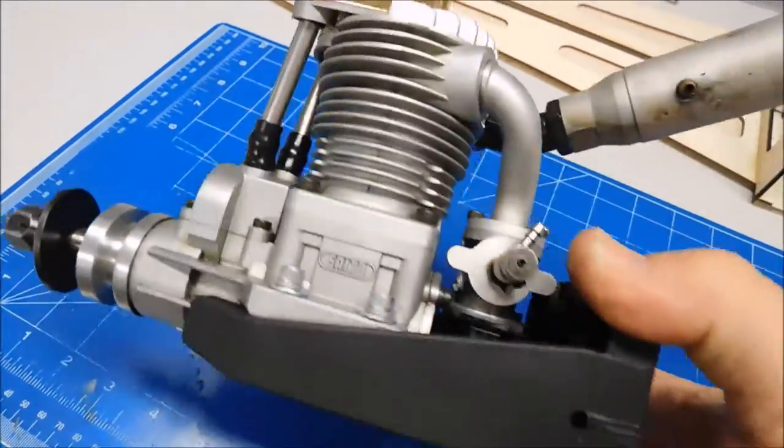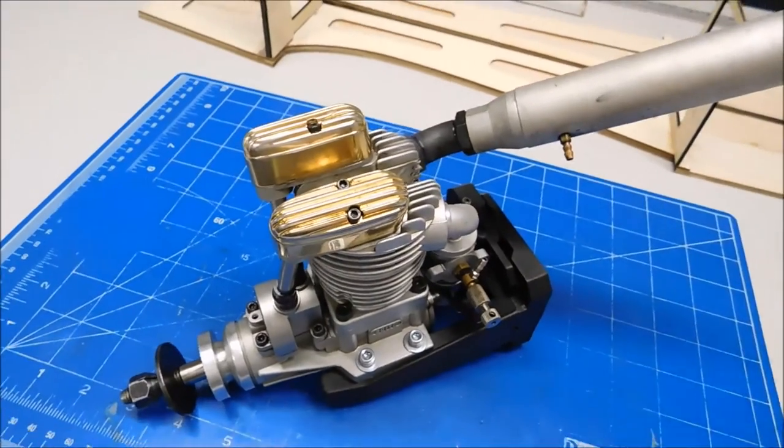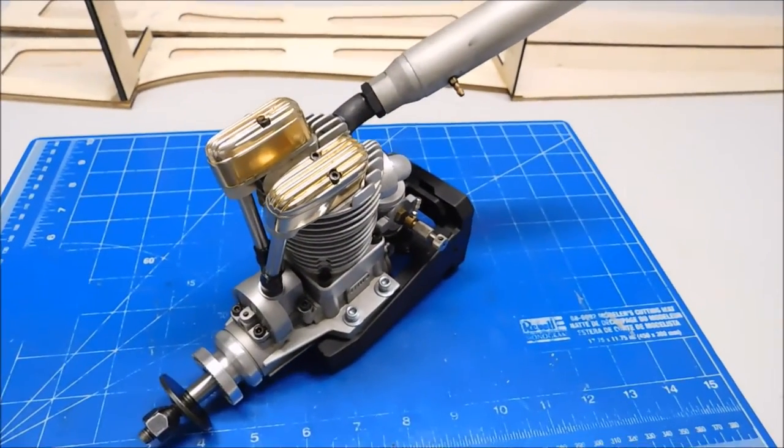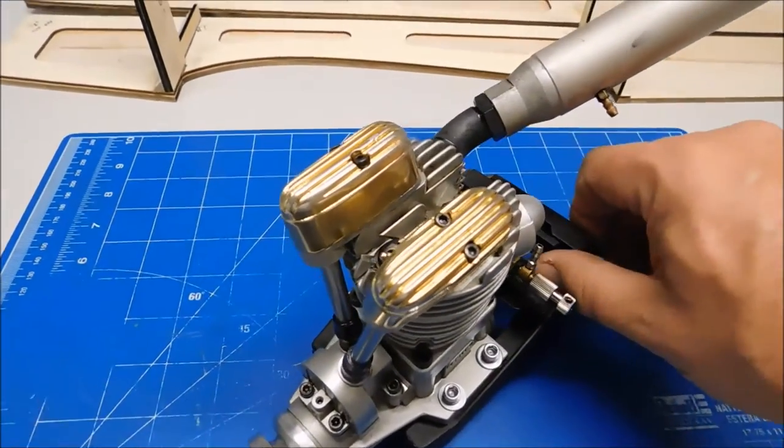This engine is already attached to the mount, it's ready to go. I've got the firewall pieces laminated. They were all 1/8 inch ply, so it's a 3/8 inch ply firewall. I had to laminate all those pieces and they're dry now.